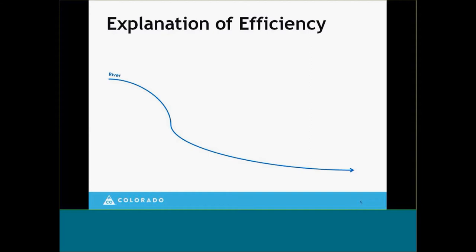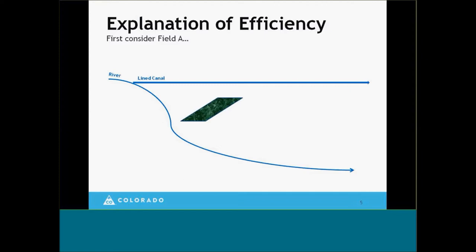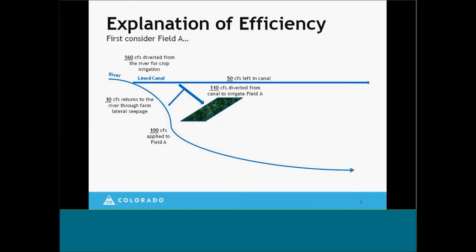That will go a lot better if we look at an example. We'll run a lined canal off the river to irrigate some land. 160 cubic feet per second is going to be diverted from the river for crop irrigation down that lined canal — lined so we can imagine there are no losses. Off that lined canal into a farm lateral, 110 CFS is diverted to irrigate Field A, leaving 50 CFS in the canal. Our farm lateral is not lined; we're losing about 10% or about 10 CFS to the river through seepage, leaving us 100 CFS to apply to the field.